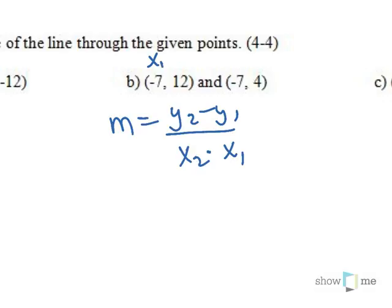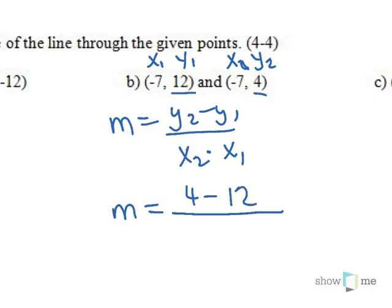I'm going to label my points x1 and y1, x2 and y2. And then I just need to plug them into the formula. y2 is 4 minus y1 is 12 over x2 is negative 7 minus x1 is also negative 7.